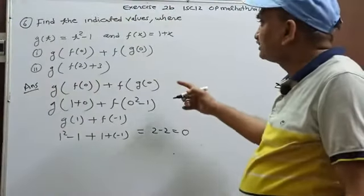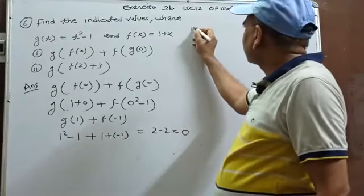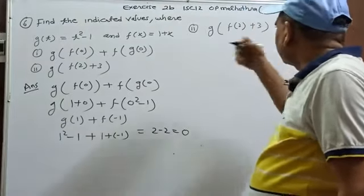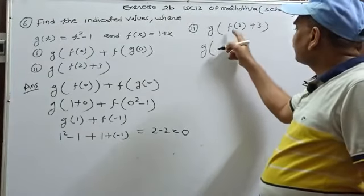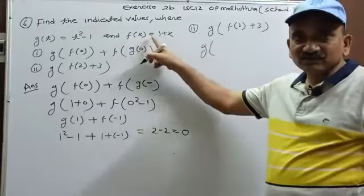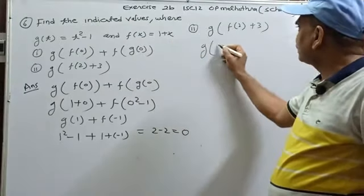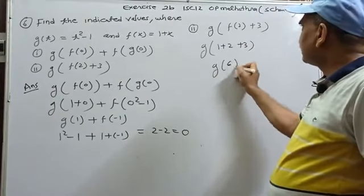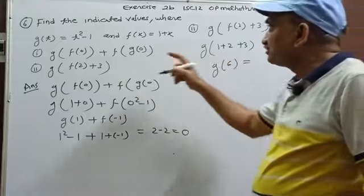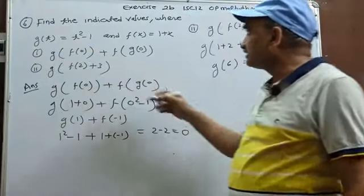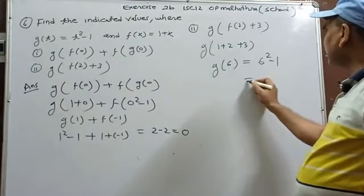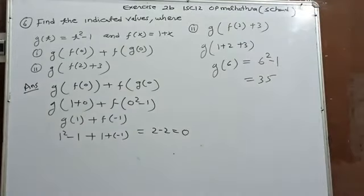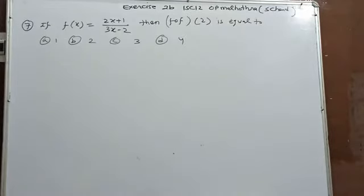Second part: g(f(2+3))=g(f(2)+3)... actually g(f(2)+3). f(2)=1+2=3, so f(2)+3=6. Then g(6)=6²-1=36-1=35. Answer is 35.